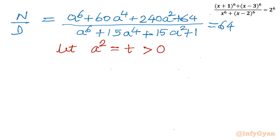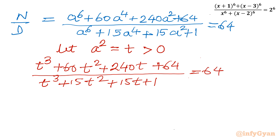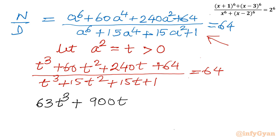Substituting t = a^2, the equation becomes: (t^3 + 60t^2 + 240t + 64) / (t^3 + 15t^2 + 15t + 1) = 64. The denominator cannot be zero. After cross multiplication and simplification, we get 63t^3 + 900t^2 + 720t = 0. Now t is common and the equation is divisible by 9.